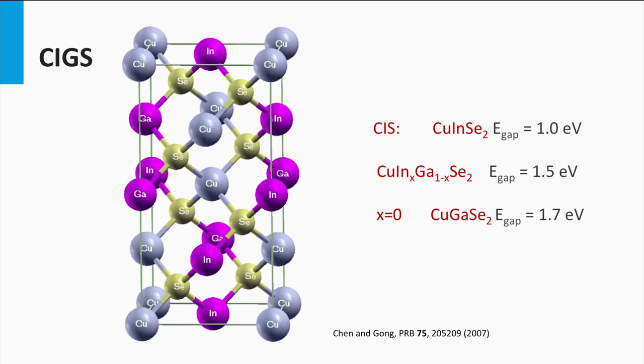X equals 0 means it is a copper gallium selenide material, and X equals 1 means it is a copper indium selenide material. Using the copper gallium ratio X, the band gap can be tuned from copper gallium selenide at 1.7 eV at X equals 0, down to 1.0 eV for X equals 1.